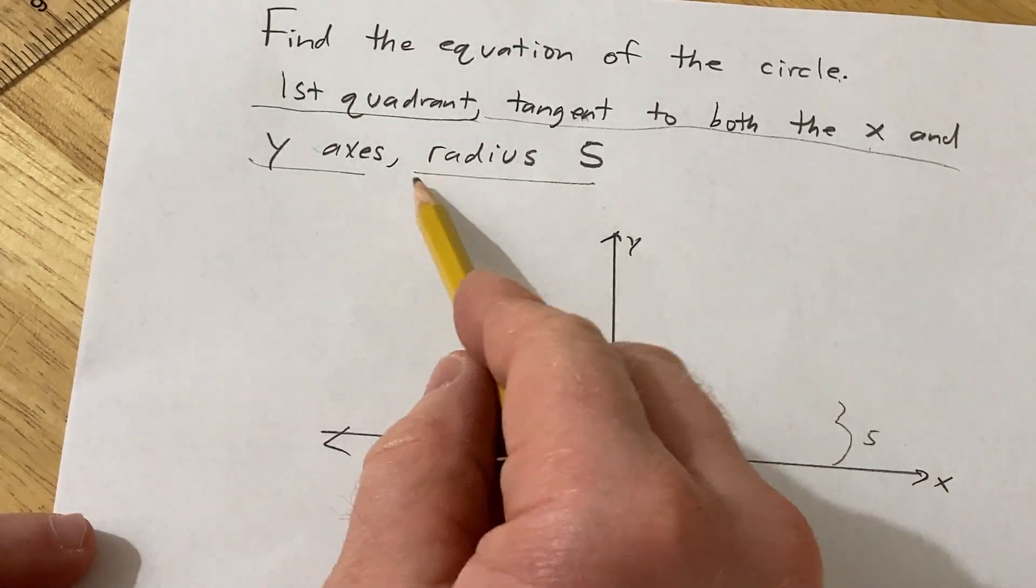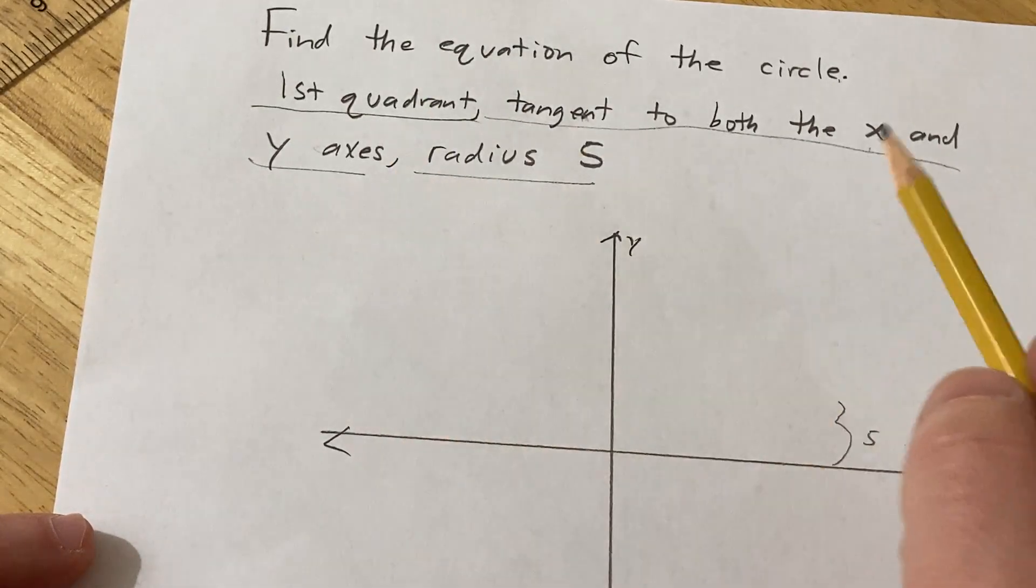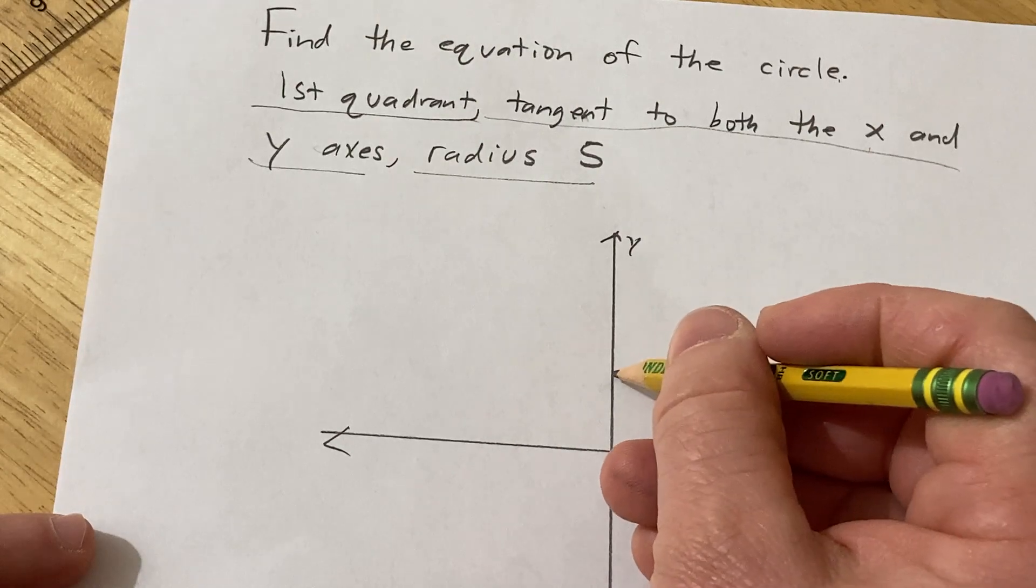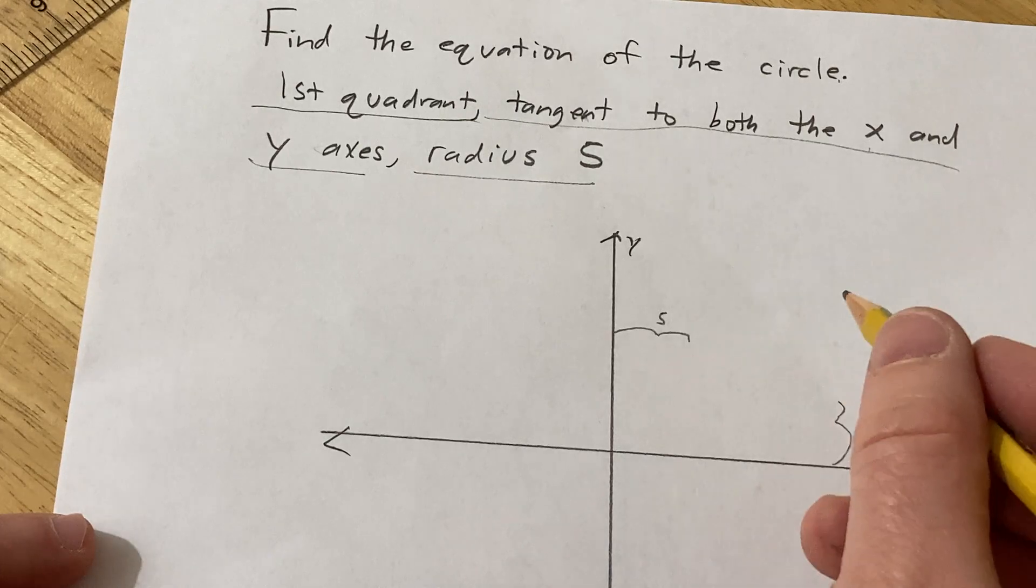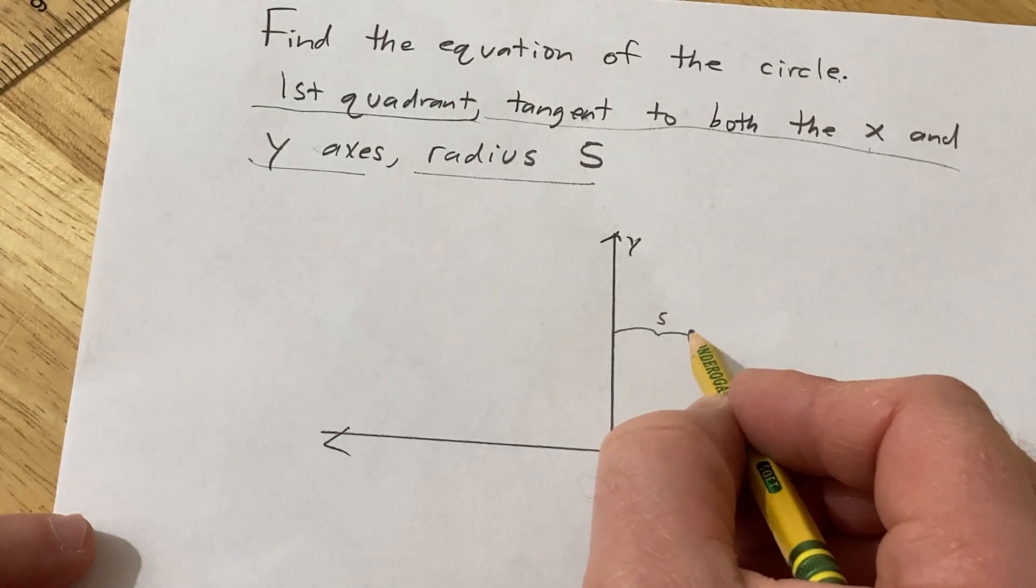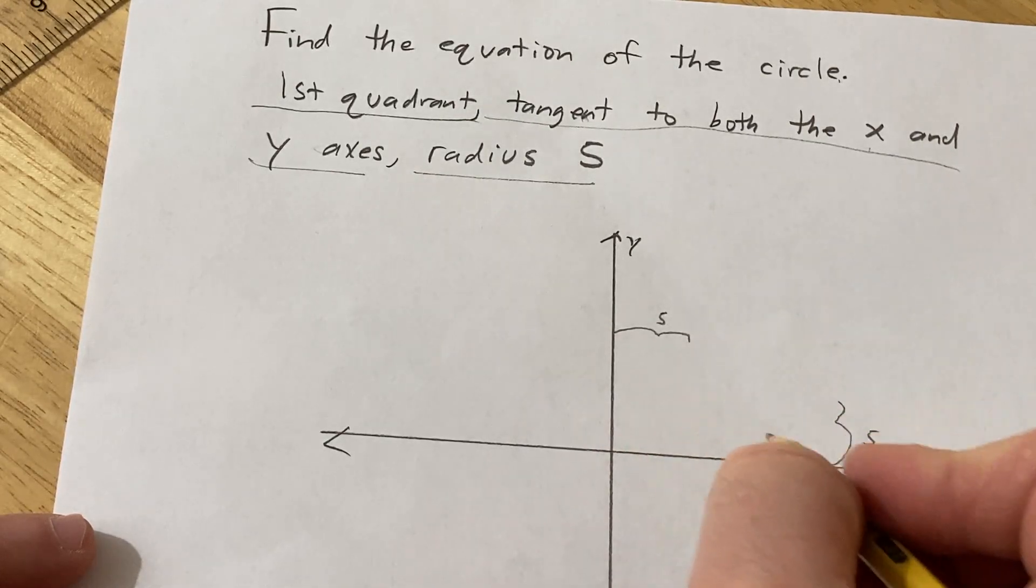However, it's tangent to the y-axis so it has to be a distance of 5 from the y-axis as well. Basically we need a circle whose center is a distance of 5 from both axes.